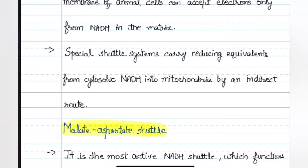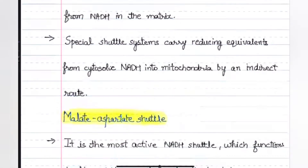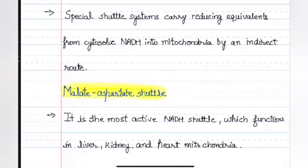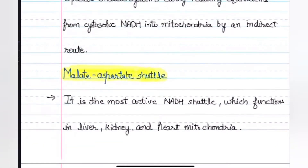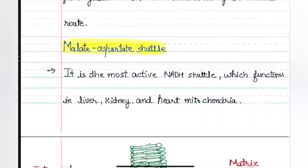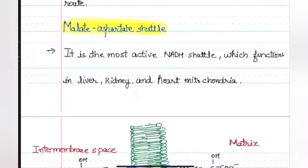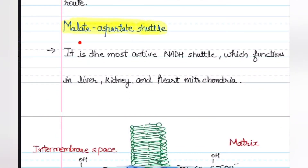The first system we are going to discuss is the malate-aspartate shuttle. This shuttles malate and aspartate across the membrane. It is the most active NADH shuttle, which functions in liver, kidney, and heart mitochondria.